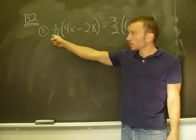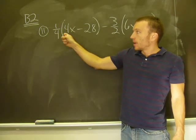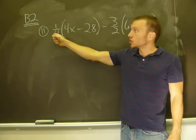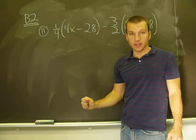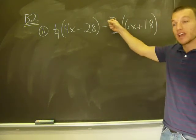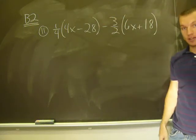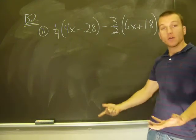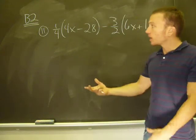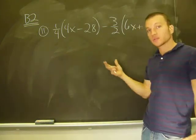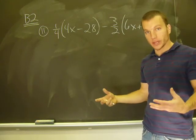So the first thing we have to do here is multiply this number by these two numbers. That is distribute the one-fourth through the parentheses and the same thing with my negative three halves distributed throughout the parentheses. Once I do that, I won't have parentheses anymore, but I should have probably a couple X terms, a couple number terms, and then we'll take it from there.